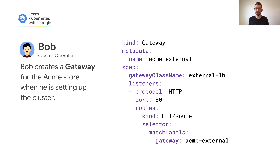As a cluster operator, Bob is responsible for managing gateways in the cluster. He creates a new gateway using the ExternalLB gateway class that Alice has defined. This gateway listens on port 80 and routes traffic with HTTP routes with the gateway label set to Acme External.